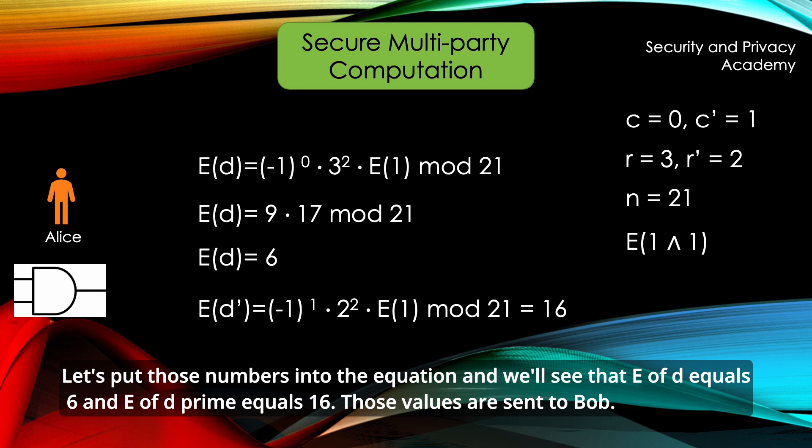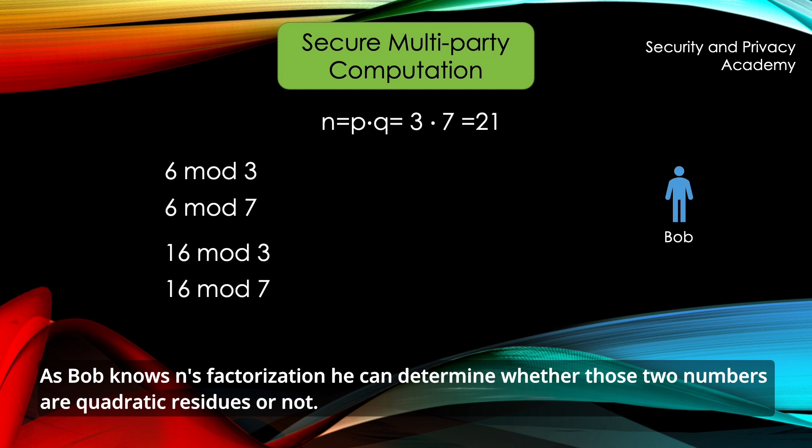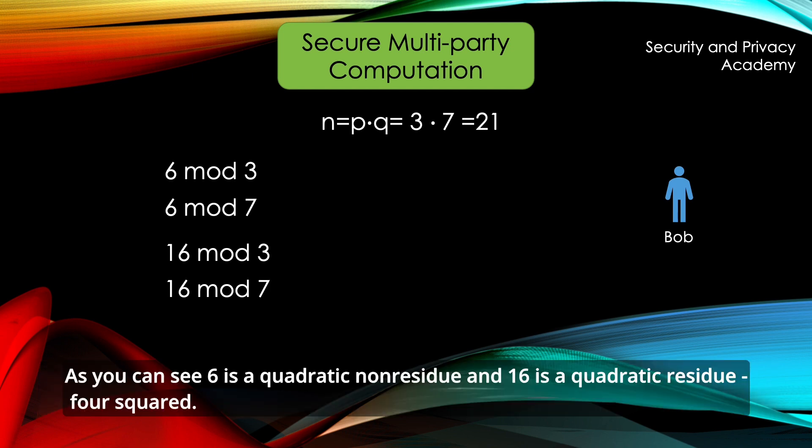Those values are sent to Bob. As Bob knows N's factorization, he can determine whether those two numbers are quadratic residues or not. As you can see, 6 is a quadratic non-residue and 16 is a quadratic residue, 4 squared.